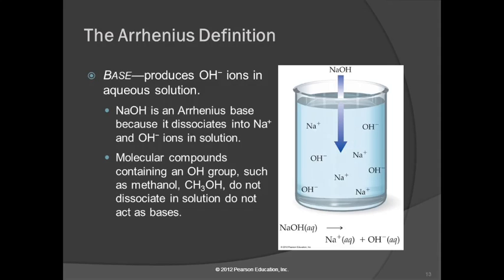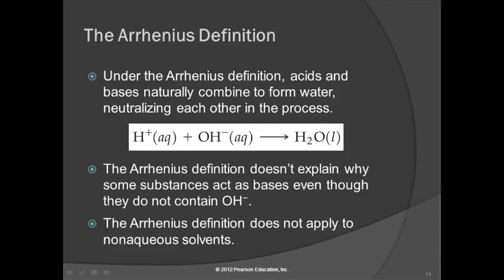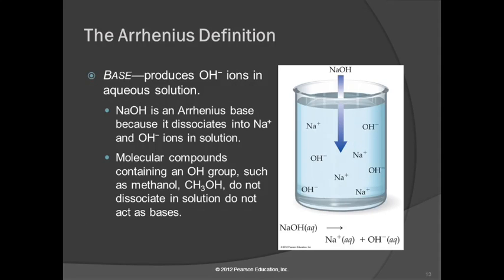Bases are defined as substances that produce hydroxide ions in aqueous solution. Sodium hydroxide, a soluble ionic compound, when it dissolves in water, separates into sodium ions and hydroxide ions — it forms hydroxide ions, and so it is an Arrhenius base. There are many compounds that contain what looks like a hydroxide group, an OH — for example, methanol, CH3OH — but this is not a base. When you put it in water, it does not ionize and form hydroxide ions. We're mostly looking at soluble ionic compounds — things like sodium hydroxide, potassium hydroxide — generally a metal and a hydroxide ion, though there are exceptions.